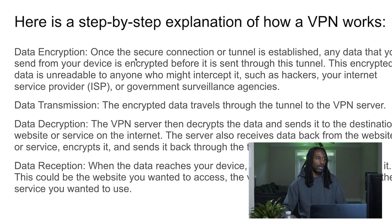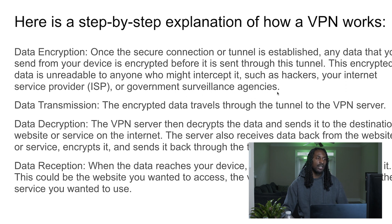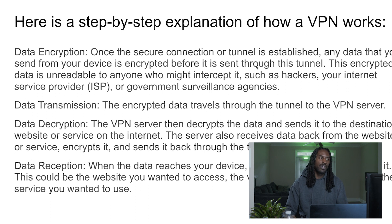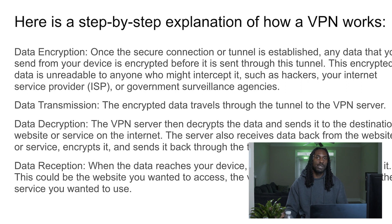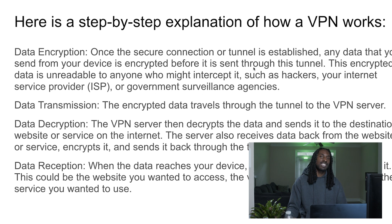Once the secure tunnel is established, any data you send from your device is encrypted before it is sent through the tunnel. This encrypted data is unreadable to anyone who might intercept it — such as hackers, your internet service provider, or government surveillance agencies. That said, if you're in a legal case fighting a battle against the feds, they're going to subpoena that VPN service provider and be able to get that information. Your ISP might not have the data because you're using a VPN to mask your IP, but your VPN service provider will give up that information if subpoenaed. So try to find a service that doesn't log data — though many advertise they don't log your data but actually do.